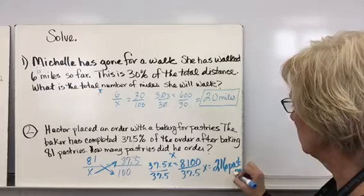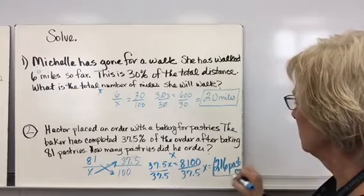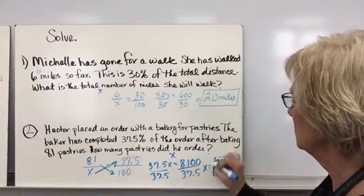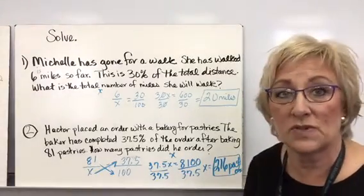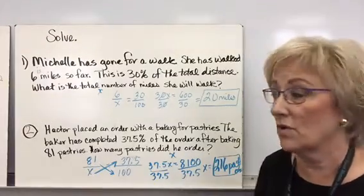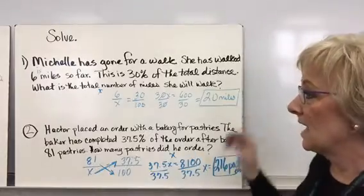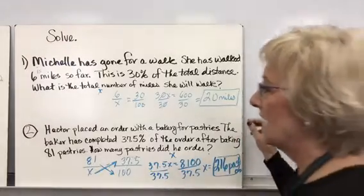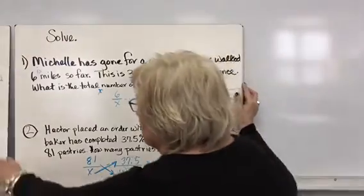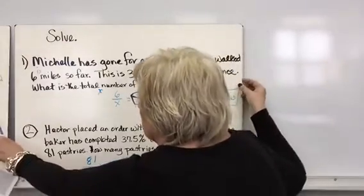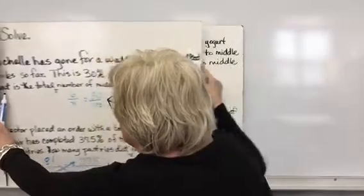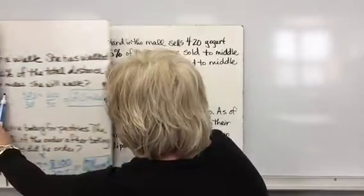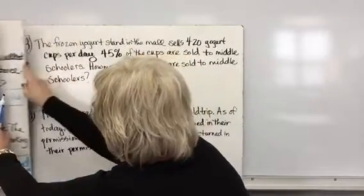When I divide both sides by 37.5, X equals 216 pastries total. So Hector ordered 216 total pastries.